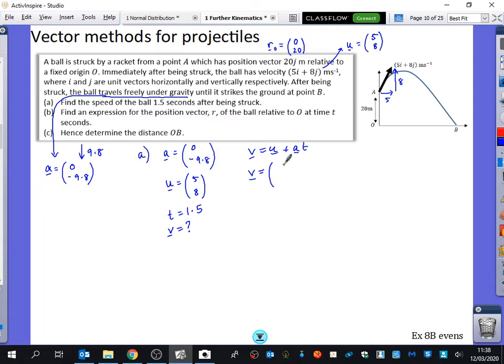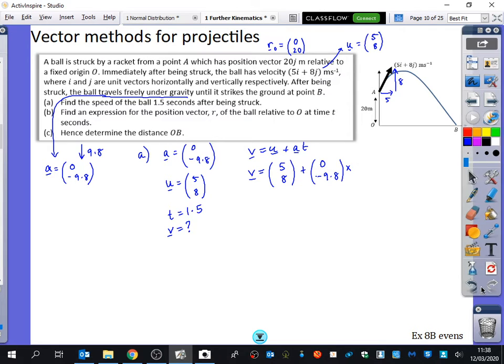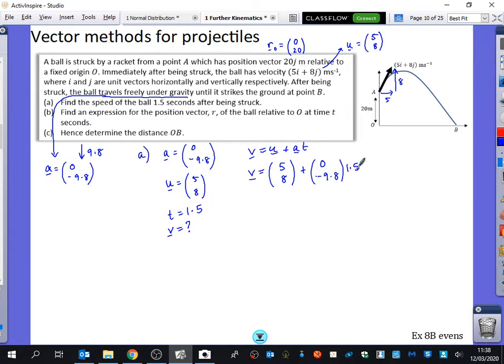You'll see what happens when we put them together. So when I say V, it equals U, which is (5, 8), plus the acceleration, which is (0, -9.8), multiplied by 1.5. So what's the horizontal part going to be? 5. Why is the horizontal part 5? Because it just doesn't change. There's no acceleration. So in the horizontal part, we just get that V equals U. And then we get 8 minus 9.8 times 1.5, which is -6.7.